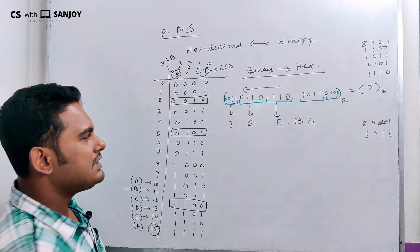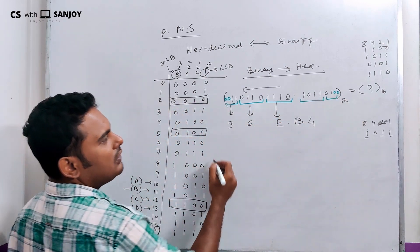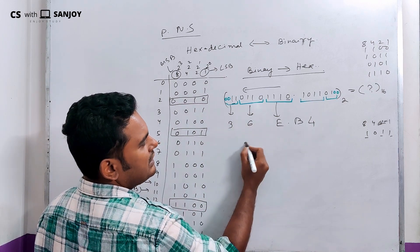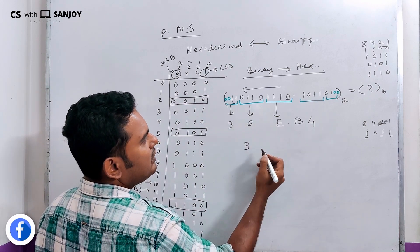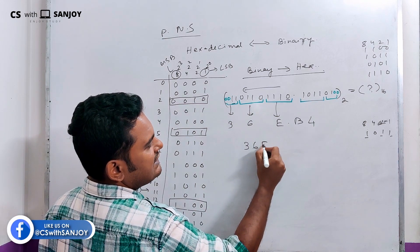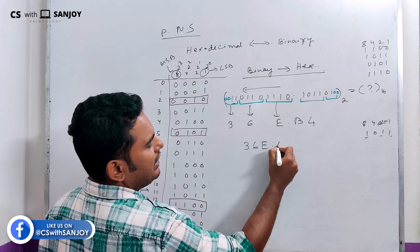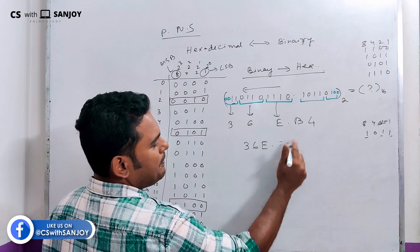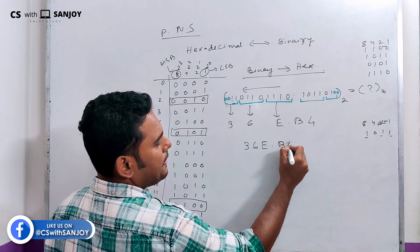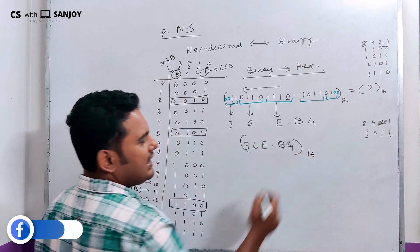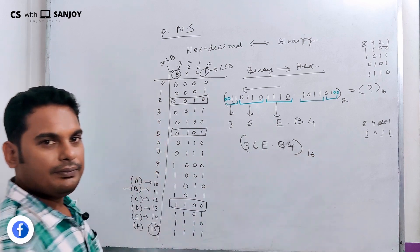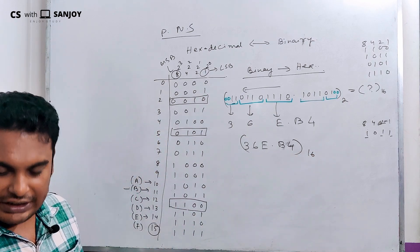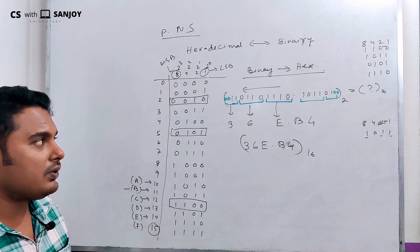The binary number, when grouped and converted, gives the corresponding hexadecimal number 36E.B4. So this is the hexadecimal number. We can quickly verify using the same method.